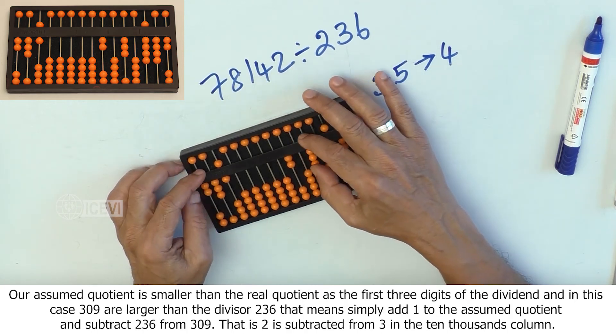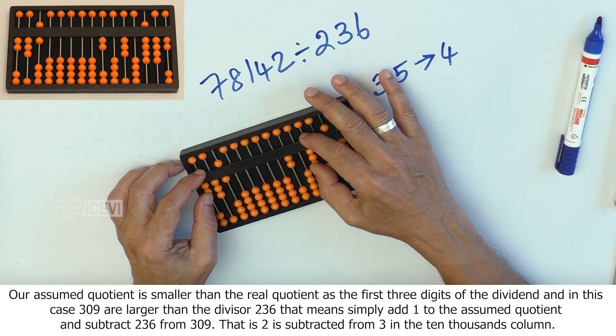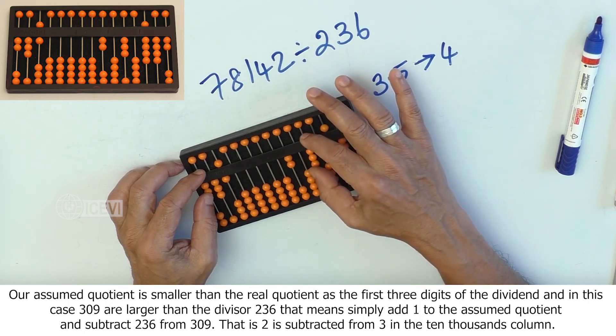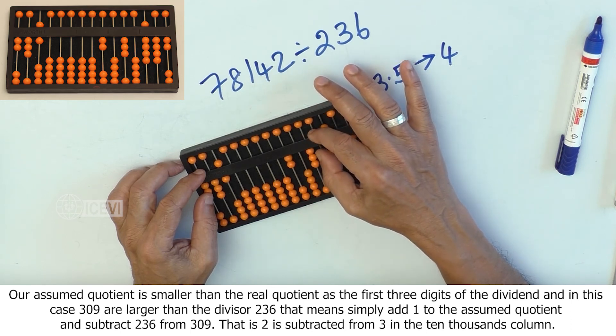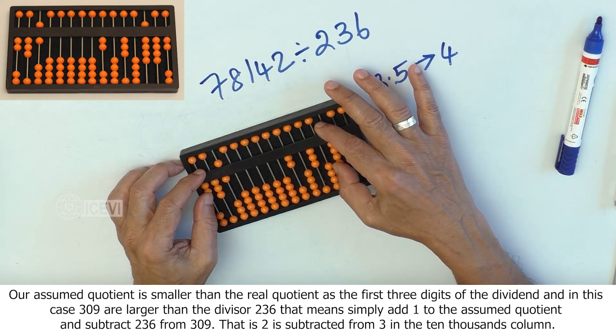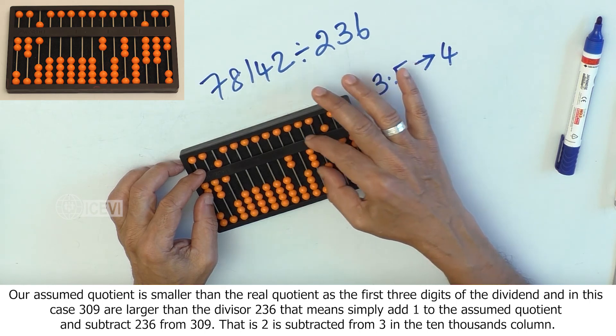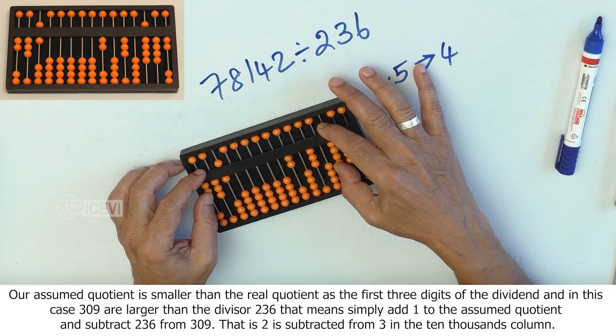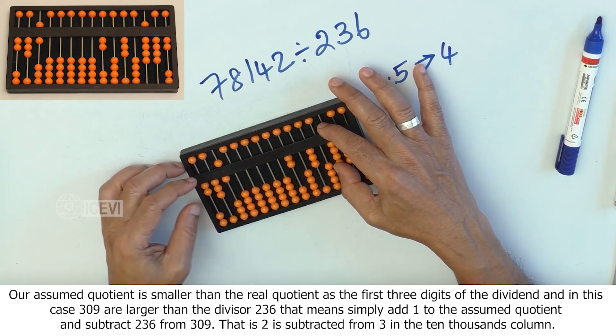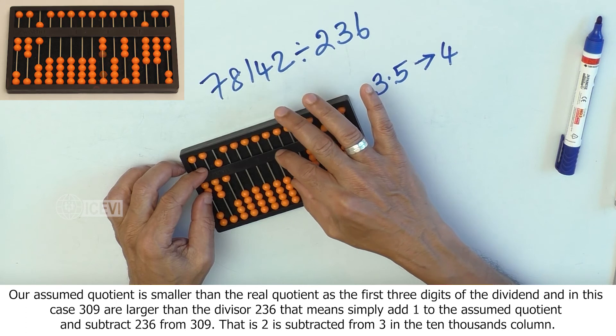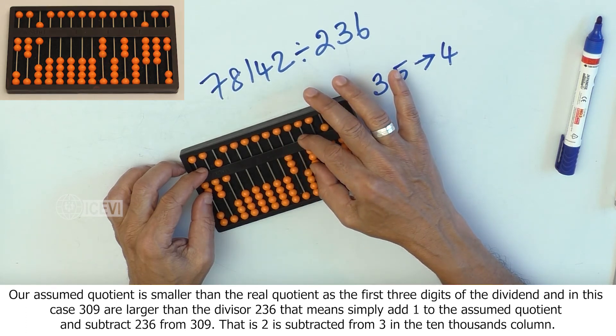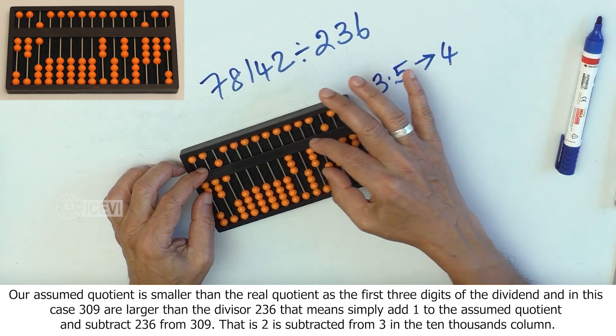What is that error? Our assumed quotient is smaller than the real quotient as the first 3 digits of the dividend, in this case 309, are larger than the divisor 236. That means simply add 1 to the assumed quotient and subtract 236 from 3...